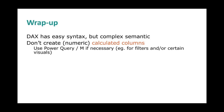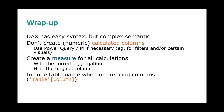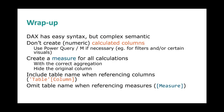The second takeaway: don't create numeric calculated columns. If you need something as a column, create it in Power Query using the M language, or make sure the data source already delivers it. Instead, create measures for all your calculations with the correct aggregation, and hide the original columns so nobody is confused by having two 'sales amount' fields. Always use the table name when referencing columns, and omit it for measures — because this tells you whether context transition happens or not, which is critical for correctness.